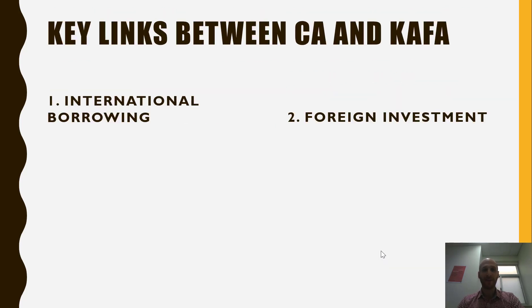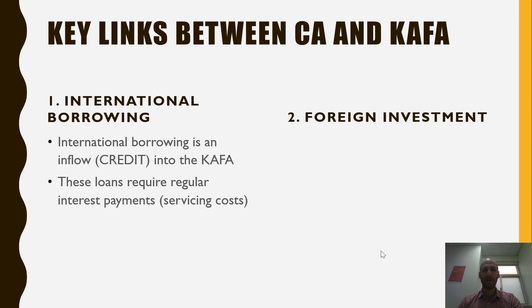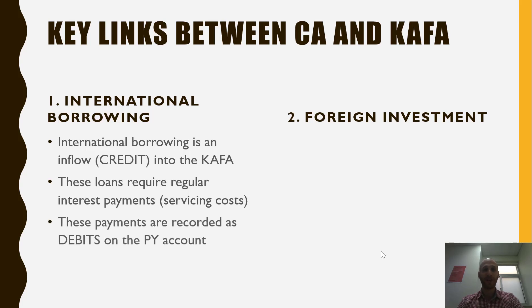The key links between the current account and the CAFA involve international borrowing and foreign investment. We know that the current account plus the CAFA plus net errors and omissions equals zero, and the strongest link between the current account and the CAFA is on the primary income account. International borrowing — Australia borrowing money from overseas — is an inflow into the CAFA. These loans require regular interest payments, which are servicing costs, and these payments are outflows — debits recorded on the current account. Borrowing money comes in on the CAFA; paying interest goes out on the current account.